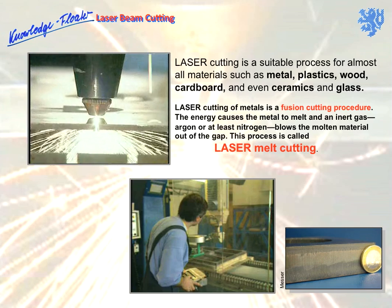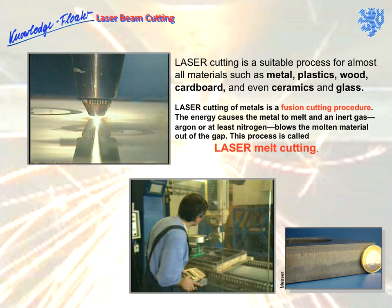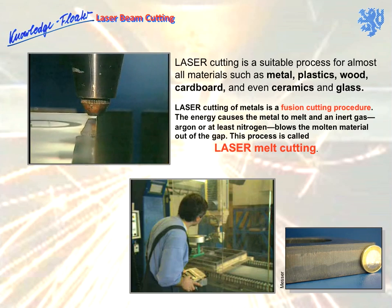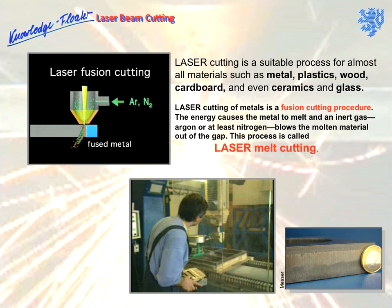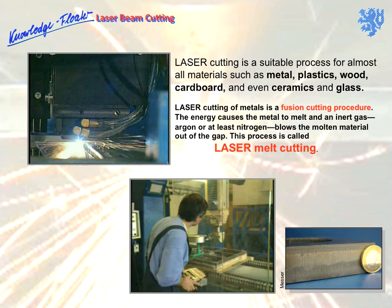Laser cutting of metals is a fusion cutting procedure. This means that the energy causes the material to melt and an inert gas, or at least nitrogen, forces the melt out of the gap. This process achieves smooth, shiny edges and clean cuts with almost all metals, including aluminium, titanium, copper materials, nickel, tungsten, molybdenum, and cobalt.